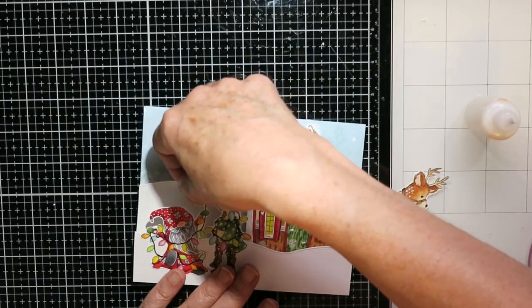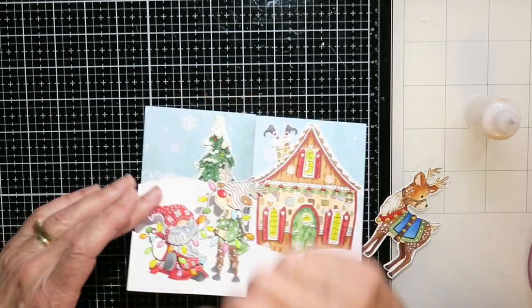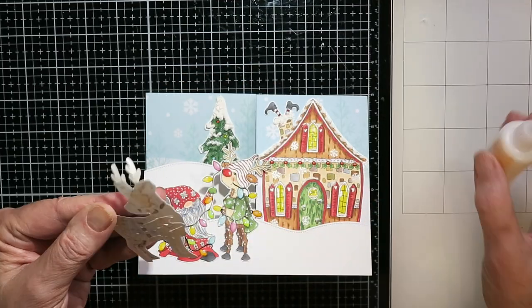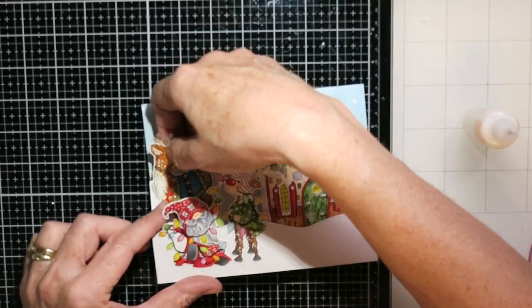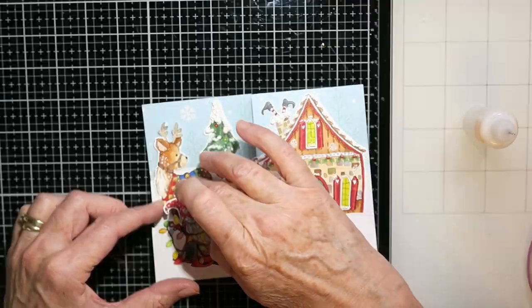Now I've cut another snow bank for this middle layer, and I'm gluing that in place. I wasn't entirely sure how tall to make that, so I kind of fiddled with it a bit, but I edited that out for you. And here I am just attaching this reindeer.